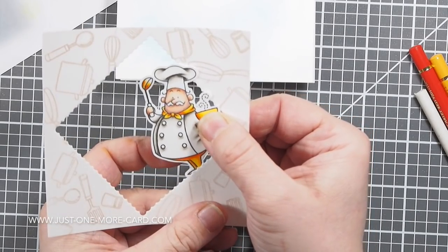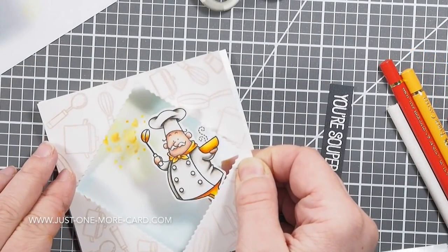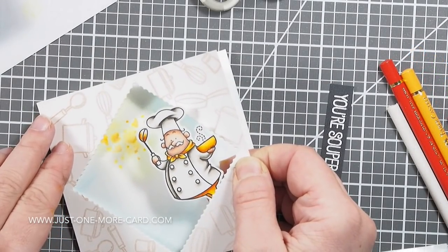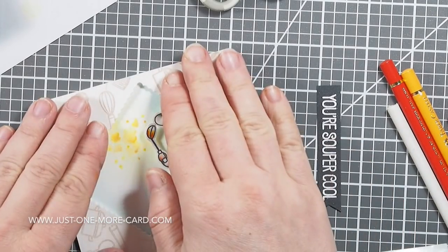Then I glued this little guy onto this panel and foam mounted the panel onto a card base, a square card base obviously. This will kind of look like the guy just popped out of the frame.